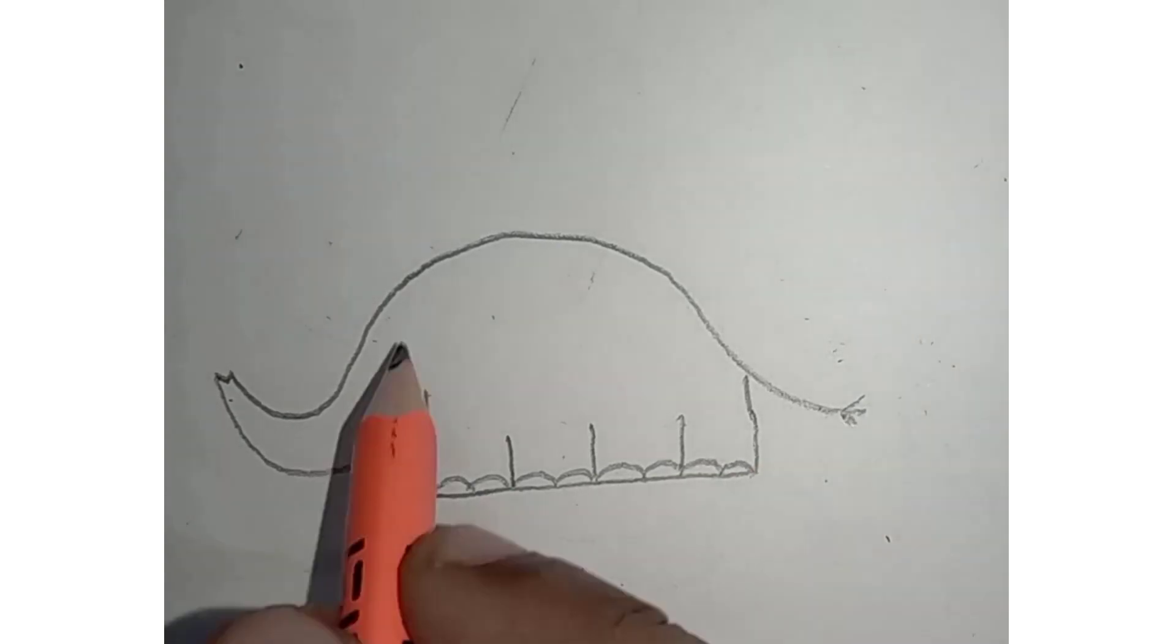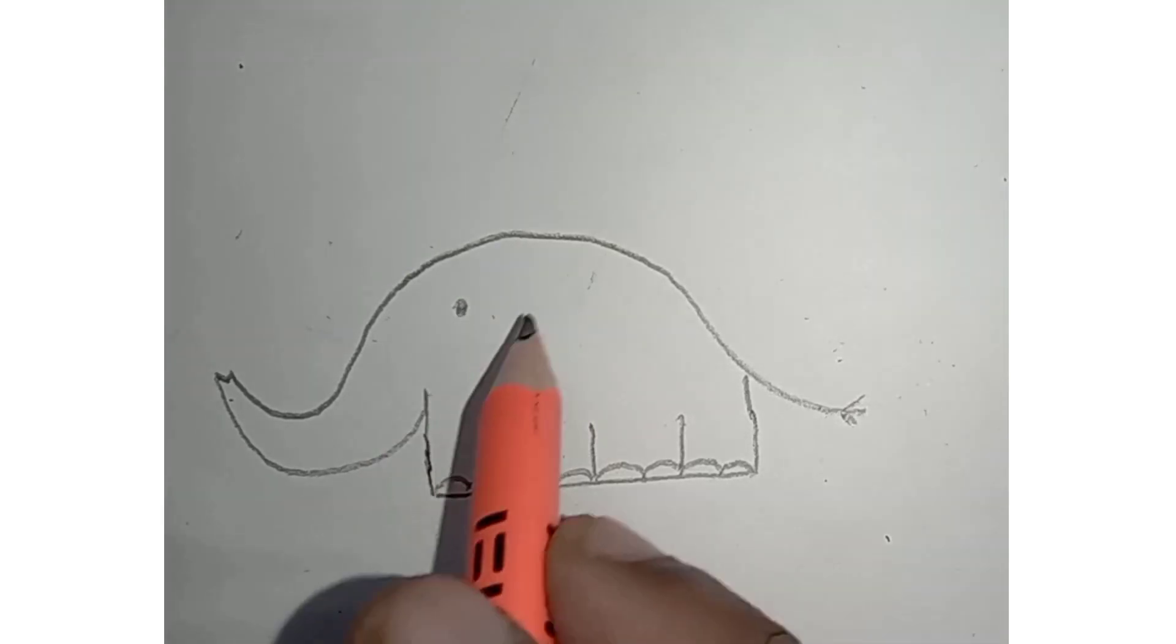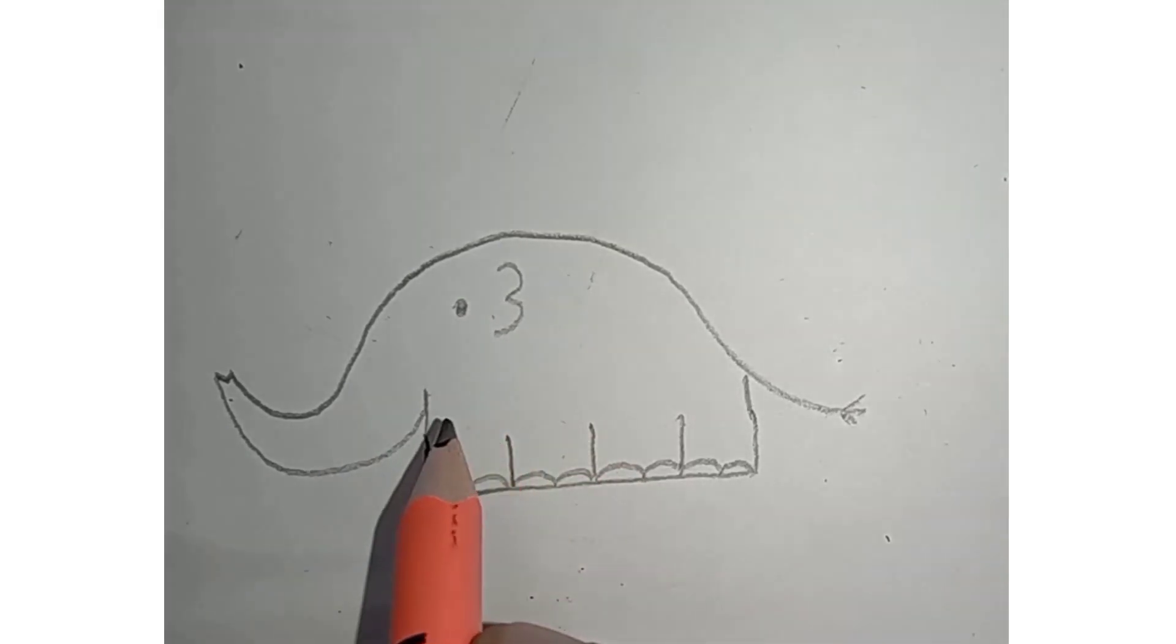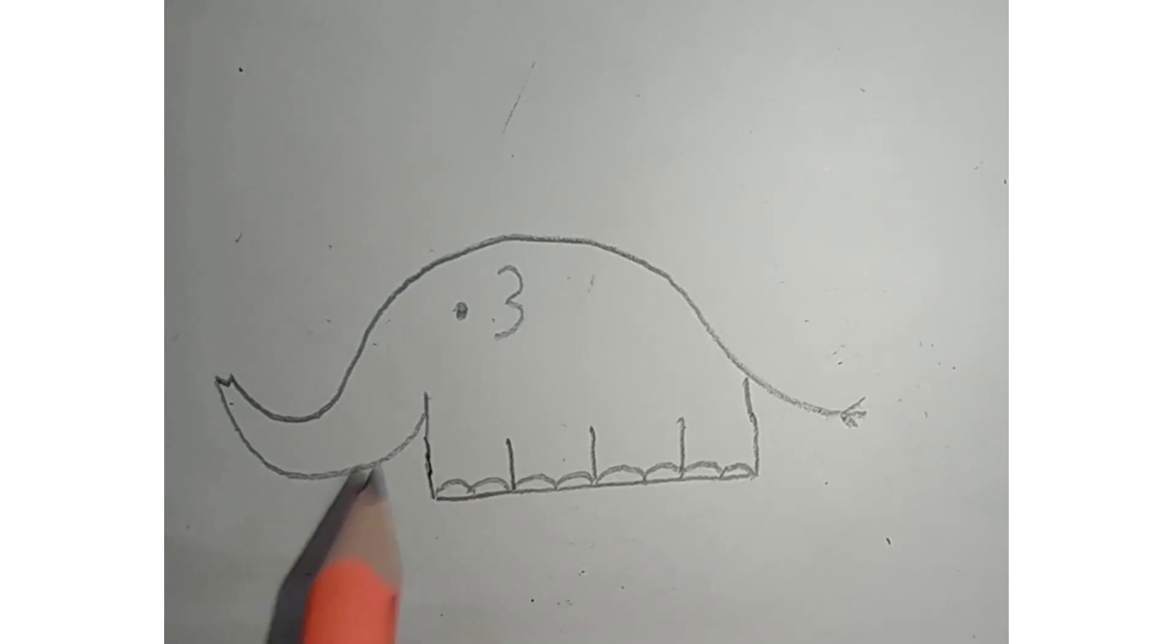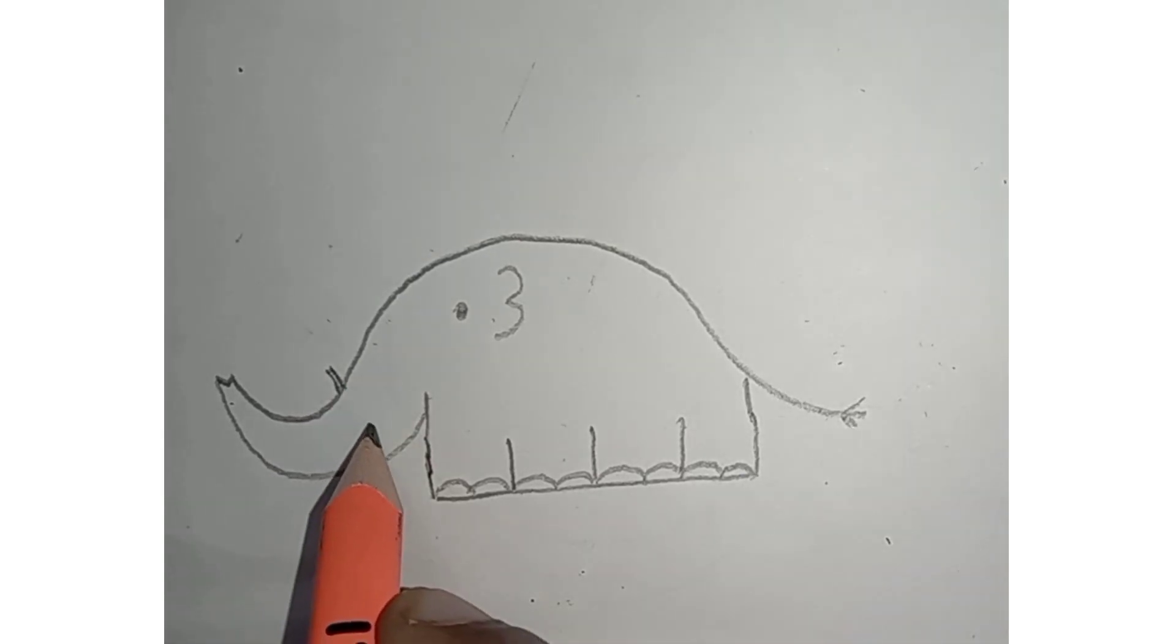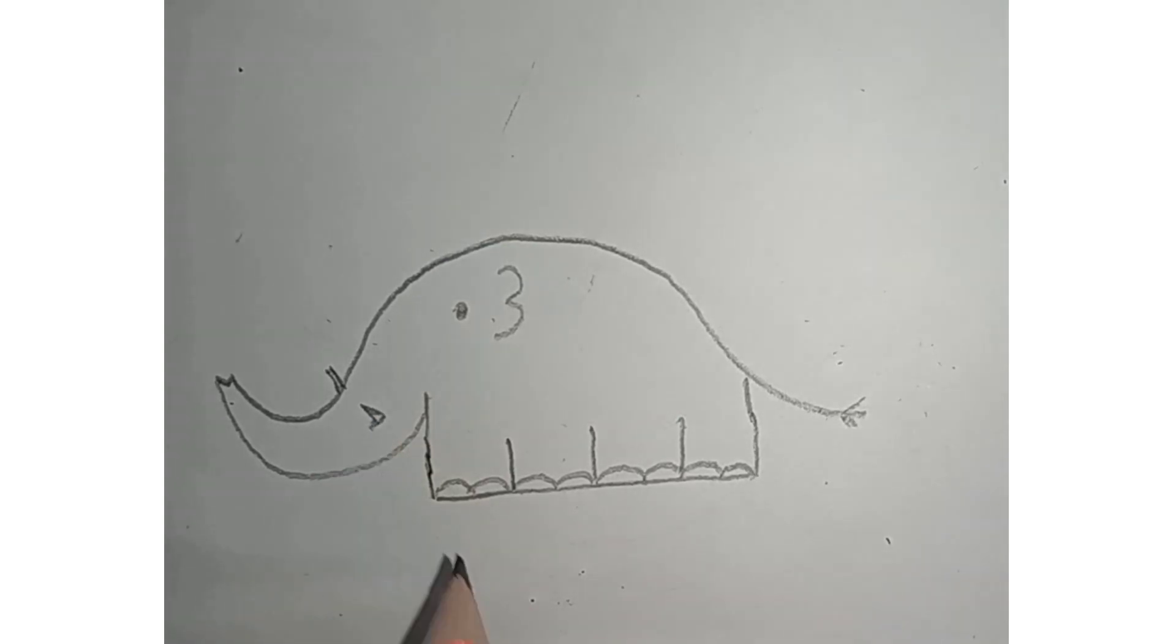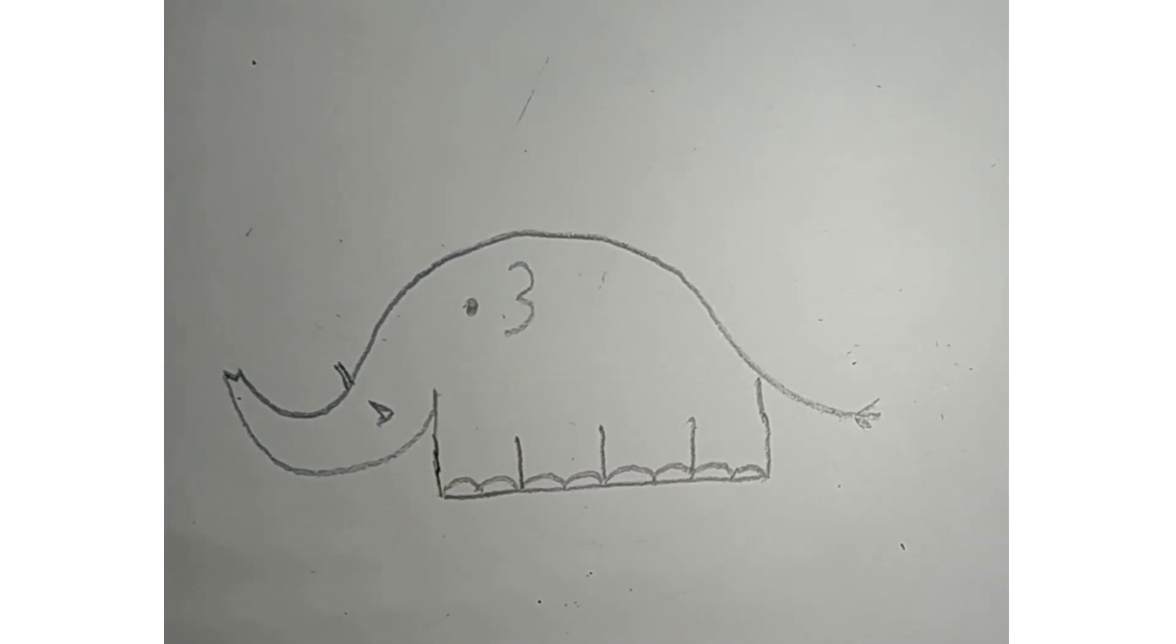Now we are going to draw the little eye and the very big fanny ears. Now what will be the elephant having? Now the cute two tusks. Yes. It's very unique for the elephant. Right kids?